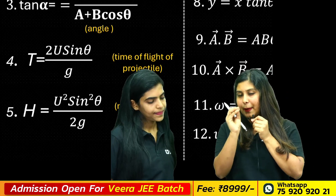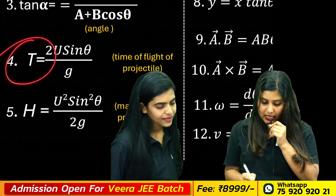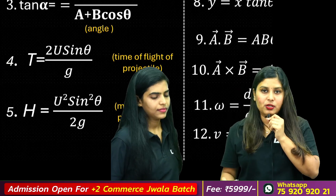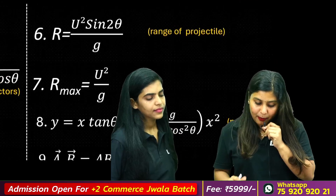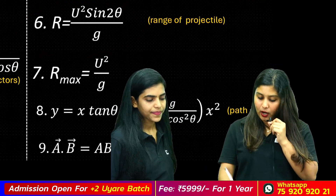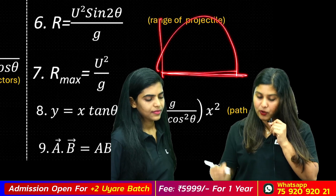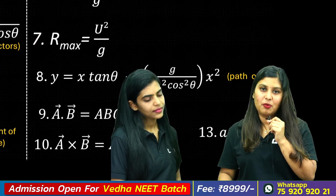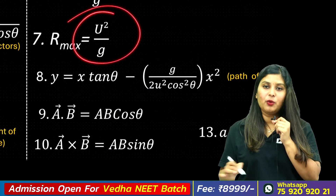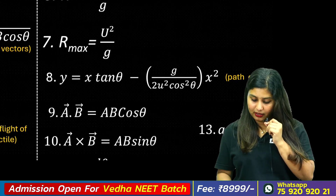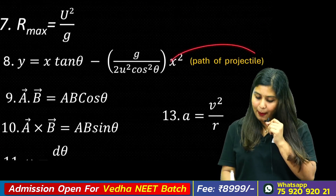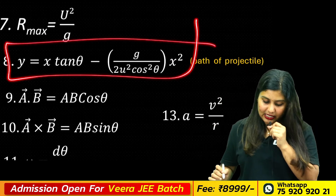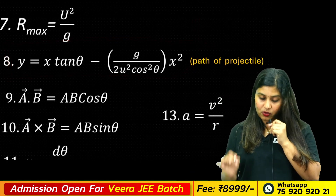In this chapter we learn projectile motion equations: the time of flight, height equation, and range equation. The maximum height is u² sin²theta divided by 2g. The maximum range is u² by g. The path of the projectile is parabolic: y equals x tan theta minus (g by 2u² cos²theta) times x squared.